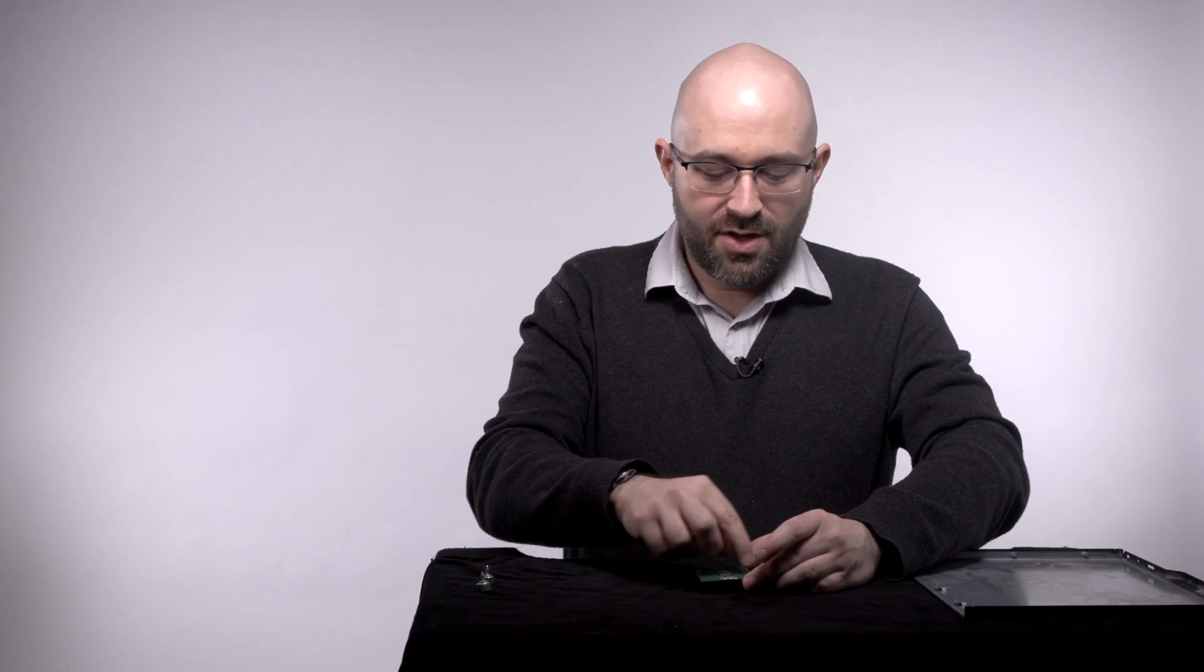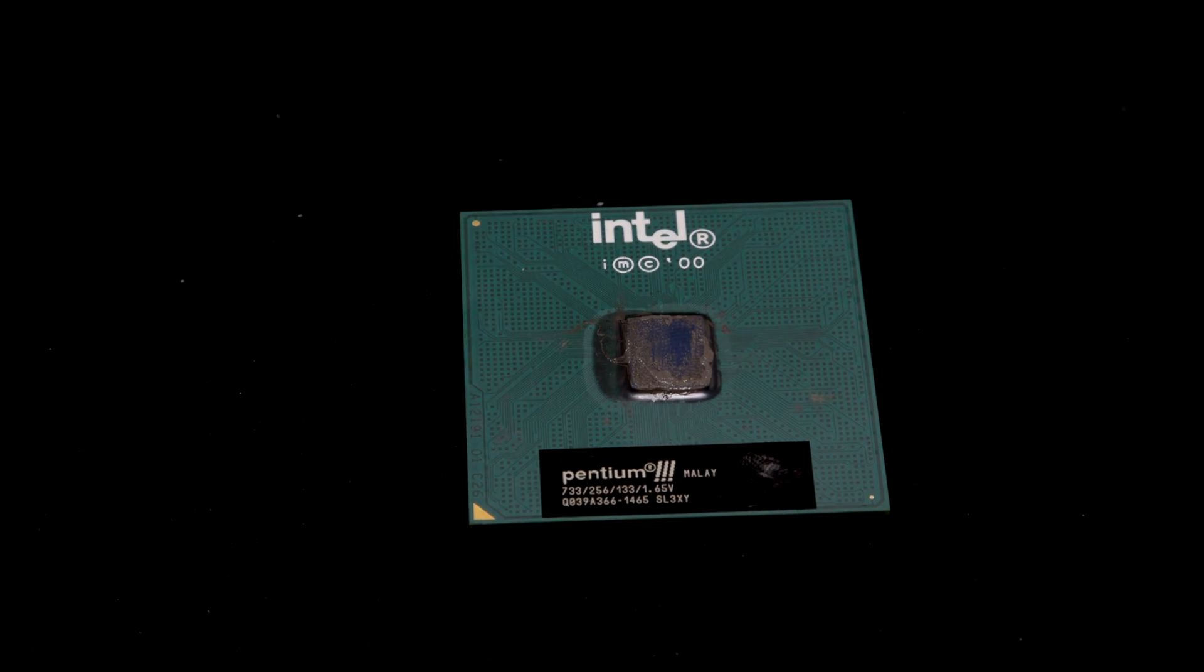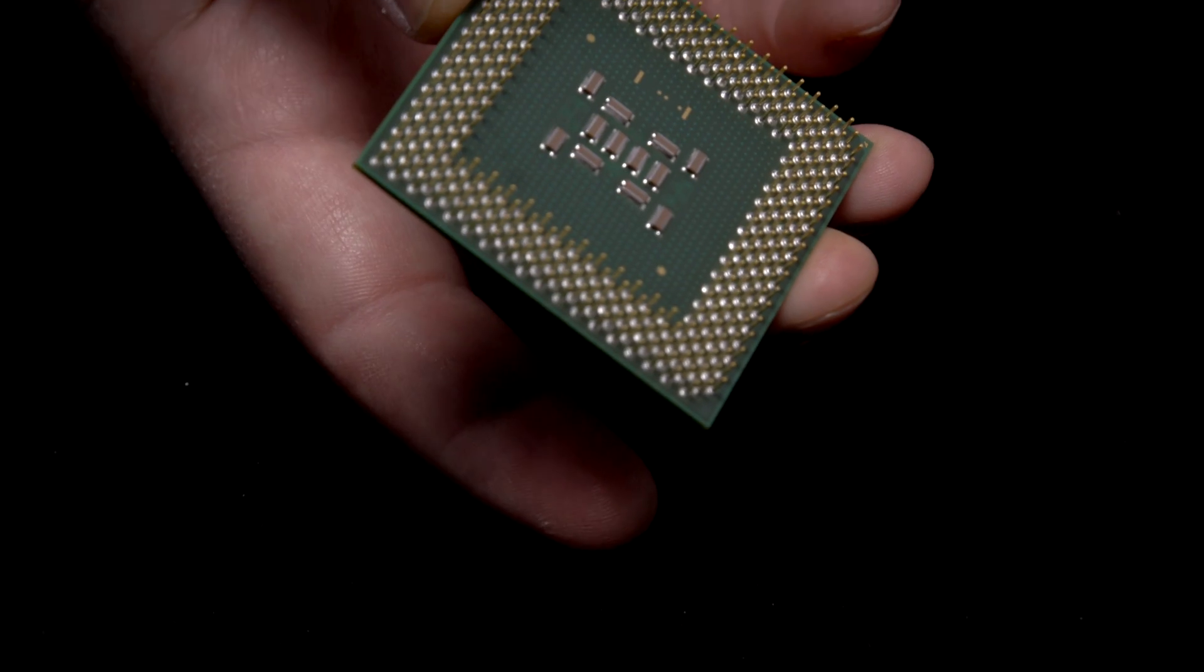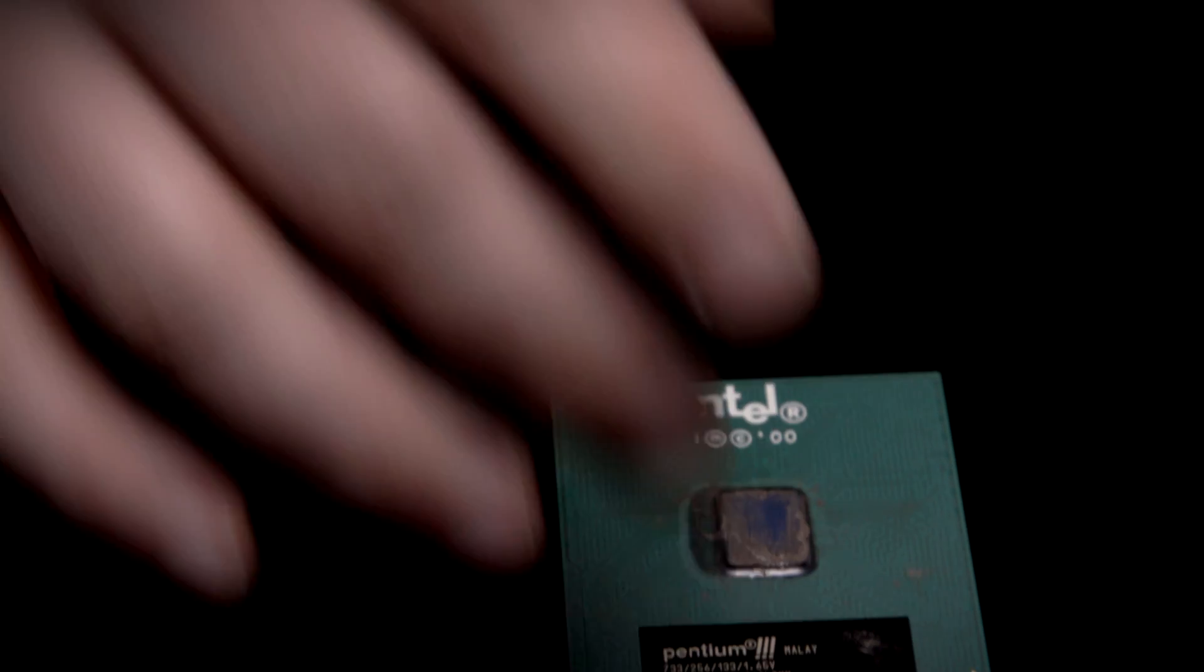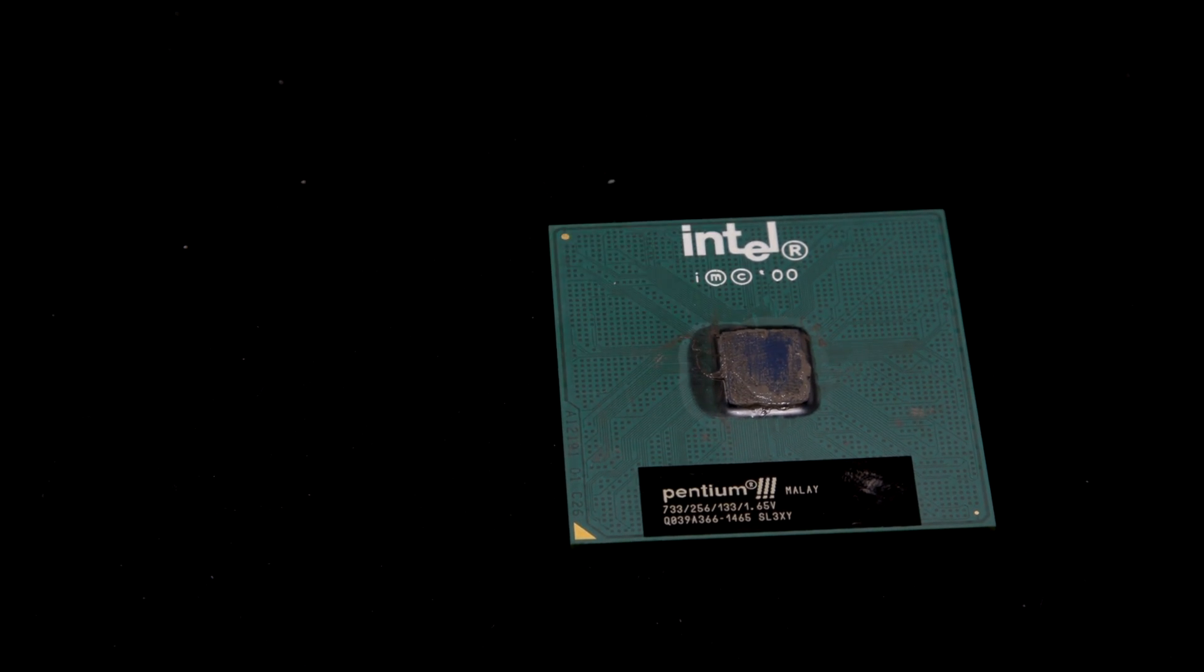So here we have the CPU, and even most of this is not the actual CPU. All the green stuff here is just connections to run out to these pins that then interface with the main board. The actual CPU is underneath that little metal can there.